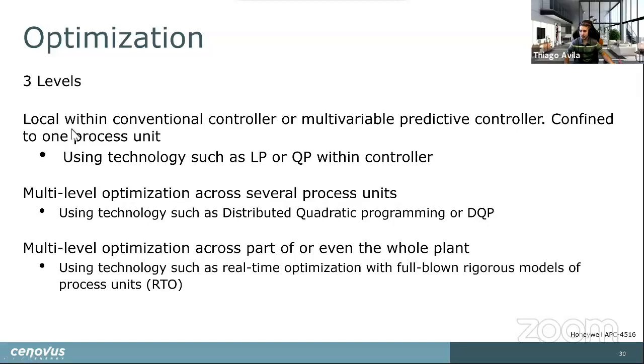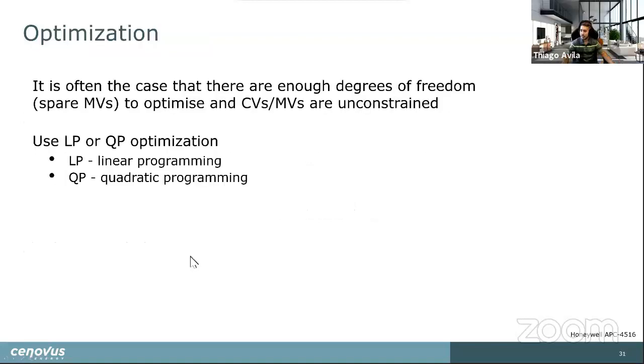You might use this if you have like certain pipeline nominations or sales commitments and you have a distributed set of production facilities and you want to optimize your sale agreement across very different facilities that aren't really related on the operating level. Most of the gains with APC are at the second level. First, to get the unit stable, you're operating within the ditches and you're optimizing to the best of your knowledge at the local level. And then once you start coordinating the different controllers together, the majority of your incremental savings are here. And you can only do the optimization if you have extra degrees of freedom. So you need more MVs than you have CVs to be able to do optimization.